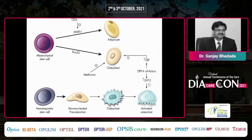DPP4 inhibitors, through the action of gastric inhibitory peptide (GIP), act on osteoblast stimulation and may increase bone mineral density. DPP4 inhibitors also increase GLP-1 and GLP-2 receptor activity; GLP-2 receptors are present on activated osteoblasts, and this leads to decreased bone resorption — again contributing to increased bone density. Hematopoietic stem cells ultimately convert into active osteoclasts, which are responsible for bone resorption.